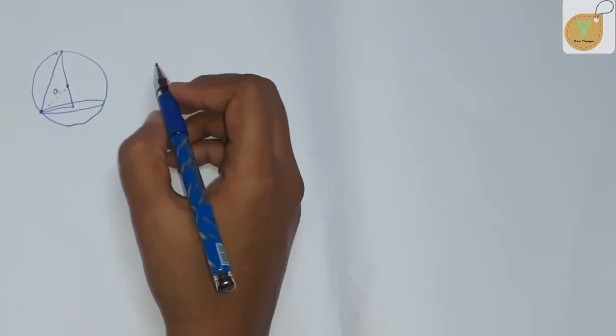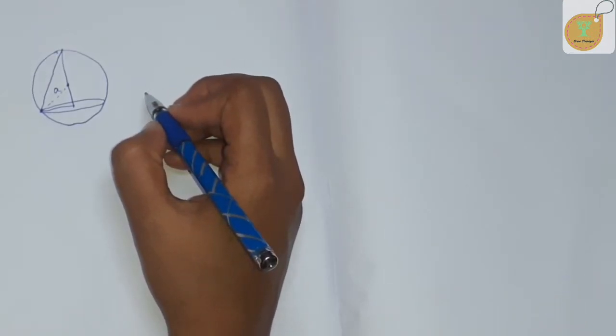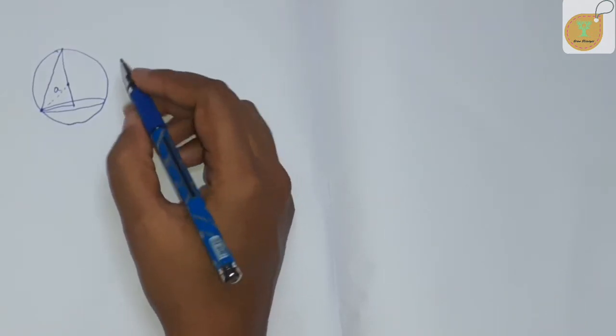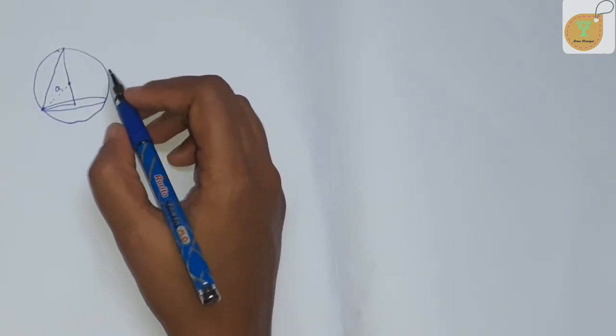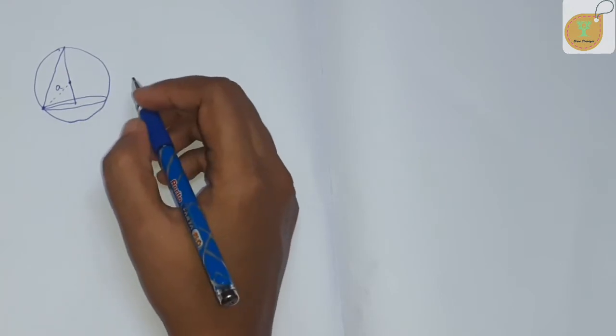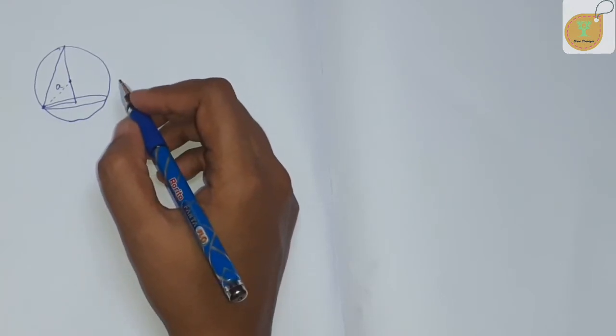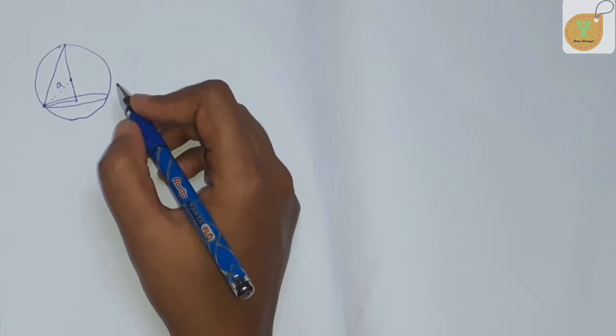The vertex and the circumference of the base of the cone are lying on the surface of the sphere. We need to find the height of the cone when its volume is maximum.